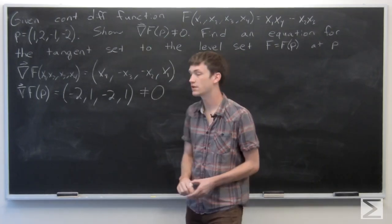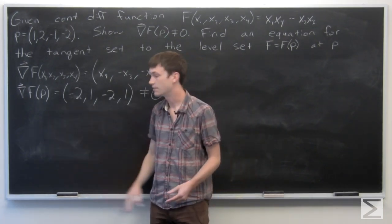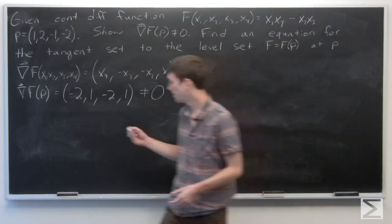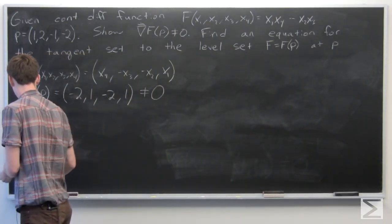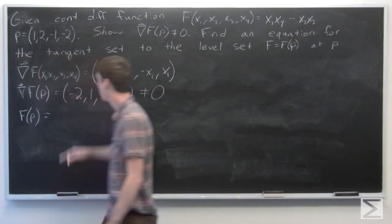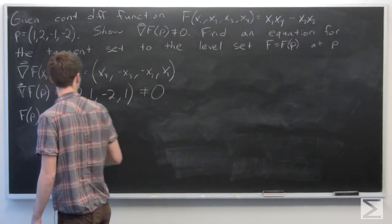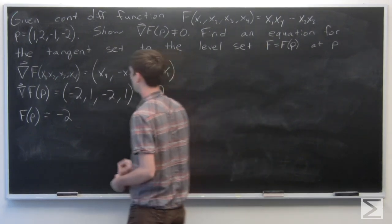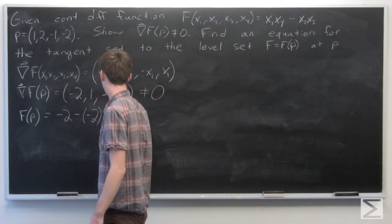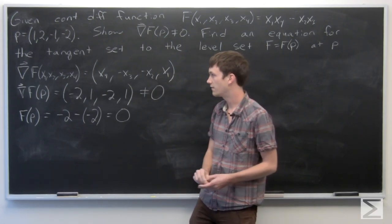Now we want to find an equation for the tangent set to the level set where f is equal to f of p. So first let's calculate f of p. We plug in our point p into our equation for f: we get x1 times x4, which is negative 2, minus x2 times x3, which is negative 2. So we're looking at the level set where f is equal to 0.